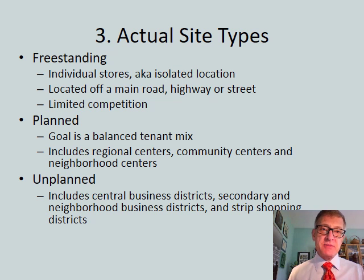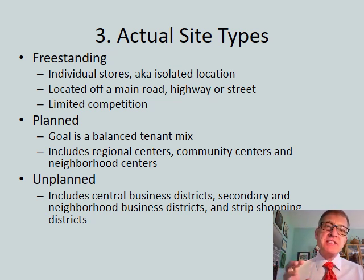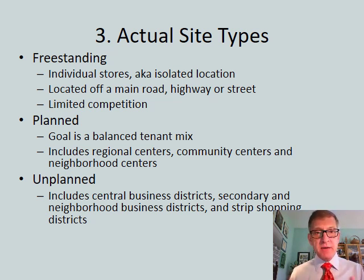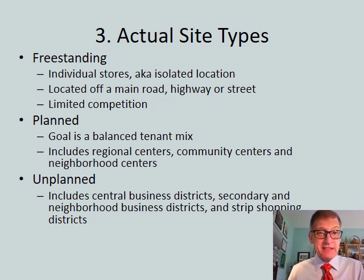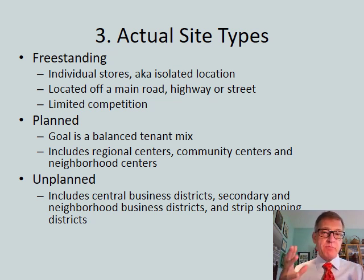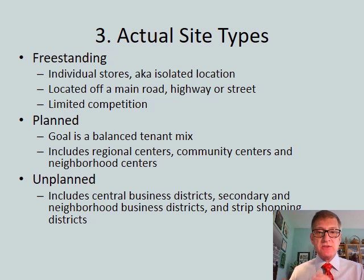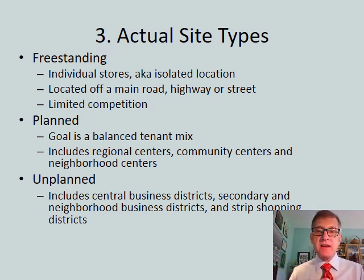Now let's look at site types — there are three actual types. First is freestanding: an isolated store in an isolated location, maybe off a main road or highway. There's very limited competition, which is a positive, but the negative is that nobody can find it. Second would be planned, where you get a balanced tenant mix — this includes regional centers, community centers, and neighborhood centers. You see this where there's an anchor store with others attached to it.